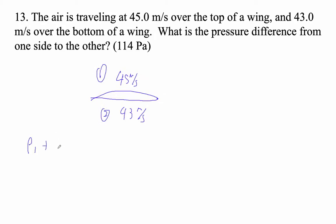So P1 plus rho GH1. Notice that we didn't say that the wing was very thin, but we're about to. Plus one half rho V1 squared equals P2 plus rho GH2 plus one half rho V2 squared.